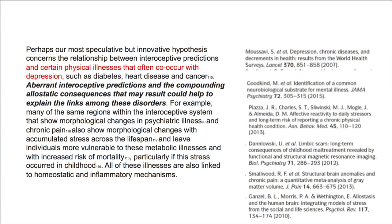The authors summarize that perhaps the most speculative but innovative hypothesis concerns the relationship between interoceptive prediction and certain physical illnesses that often co-occur with depression, such as diabetes, heart disease, and cancer. Aberrant interoceptive predictions and the compounding allostatic consequences that may result could help to explain the link between these disorders. Many of the same regions within the interoceptive systems that show morphological changes in psychotic illness and chronic pain have also been implicated. These stresses accumulate throughout the lifespan and leave individuals more vulnerable to metabolic illnesses, particularly if the stress occurs in childhood.